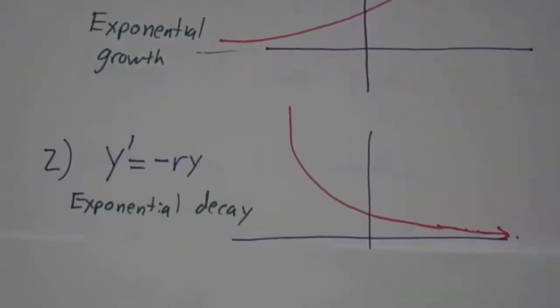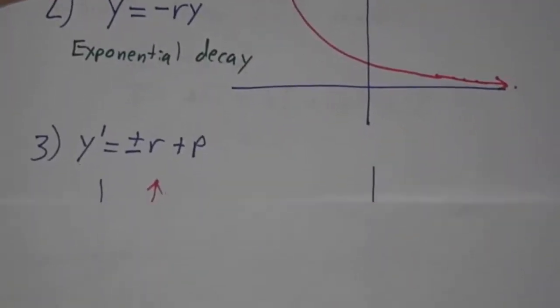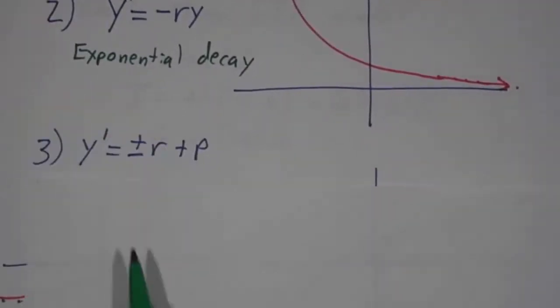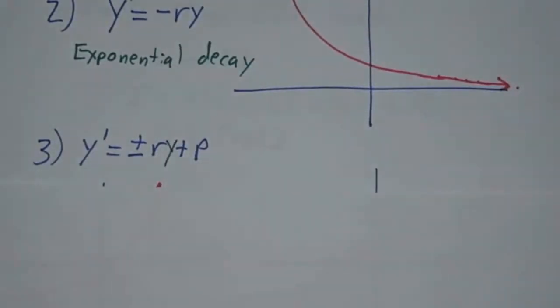The second kind is exponential decay, where something drops by an amount proportional to how much is already there. The last is a similar kind of equation, where the rate of change is plus or minus a multiple of what's already there, plus a constant.